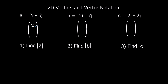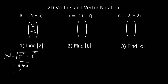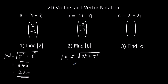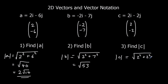So now we've got A as 2 along, 6 down. The magnitude is the square root of 2 squared plus 6 squared, which is root 40, or simplified to 2 root 10. For B, the magnitude is the square root of 2 squared plus 7 squared, which is root 53. And for C, along 2, down 2: the magnitude is the square root of 2 squared plus 2 squared, which is root 8, or 2 root 2.